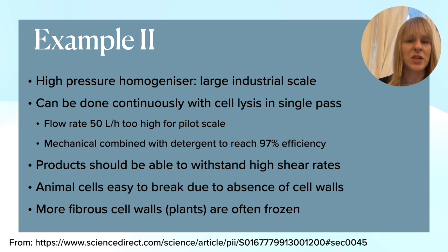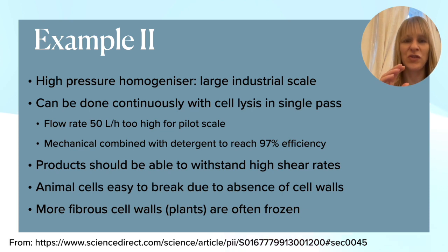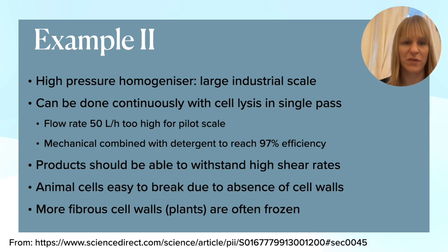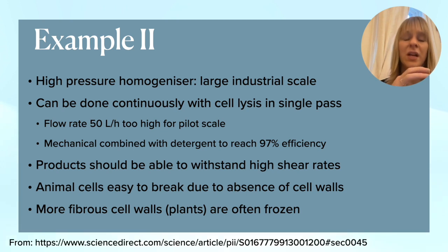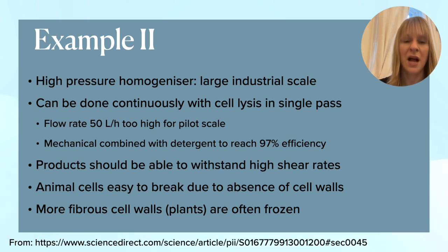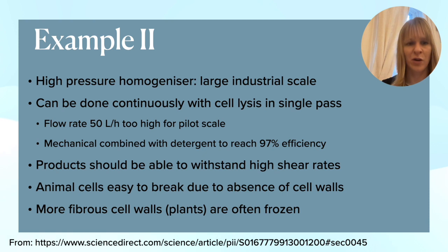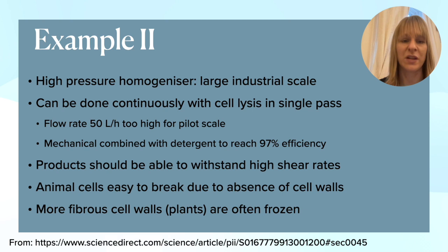The flow rate achievable of 50 liters per hour is too high for small pilot-scale reactions, so on smaller scales you tend to use ultrasonication, enzymatic, or chemical methods. One of the papers mentioned you can combine techniques — combining a mechanical option with a detergent, a chemical option, they reached over 97% efficiency in terms of disrupting cells, which is very high.